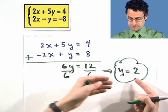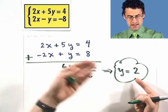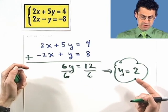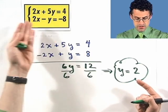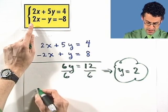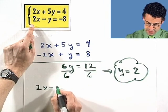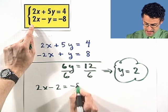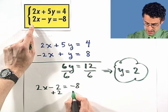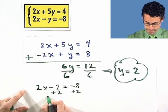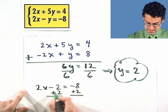You can pick either equation and plug in 2 for y and solve for x. Doesn't really matter which one you use. I'll use the second one. So if we use the second one, I see 2x minus, and in place of y I'm putting in 2, equals negative 8. If I add 2 to both sides, these drop out.